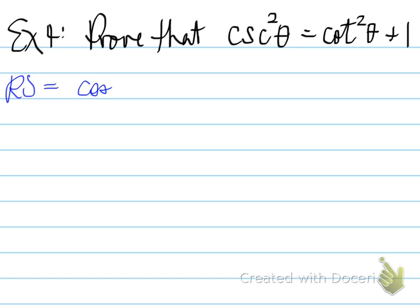By working with the right side, we can convert cotangent squared theta to cosine squared theta over sine squared theta, and that is using RI and QI.